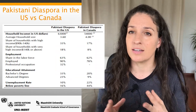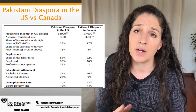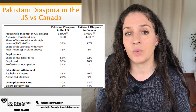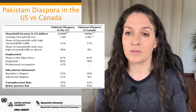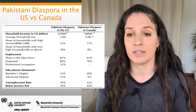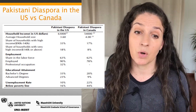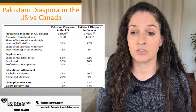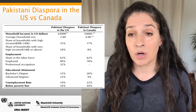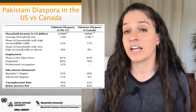Looking at the socioeconomic characteristics of the Pakistani diaspora in the US versus Canada, the diaspora in the US is slightly better off — generally earning higher incomes, being more educated with higher rates of bachelor's and advanced degrees, experiencing less unemployment, fewer people under the poverty line, and a higher share of households with high income.